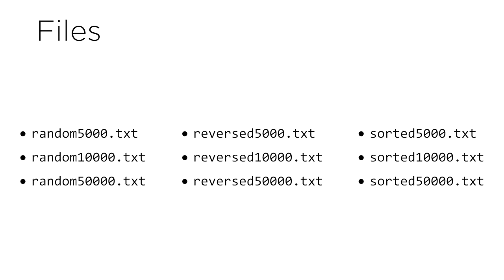The files we give you will include random5000.txt, which contains 5,000 numbers in random order. Likewise, random10000.txt and random50000.txt will contain 10,000 and 50,000 numbers respectively, all in random order. In addition, we'll give you files called reversed5000.txt, reversed10000.txt, and so forth, each containing numbers in reverse order from largest to smallest. Finally, we also give you sorted5000.txt and sorted10000.txt, which contain numbers already in sorted order from smallest to largest.